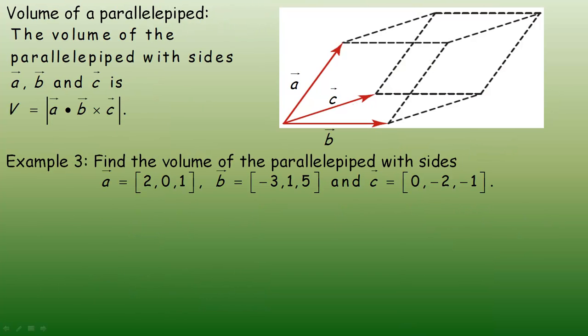One more example on the third page: another application of the dot product and cross product. The volume of a parallelepiped, a three dimensional object where each face is a parallelogram. It's not as simple as a box or prism because those vectors might be at non-right angles. The volume of the parallelepiped with sides vectors a, b and c is the absolute value of the dot product of one vector with the cross product of the other two.